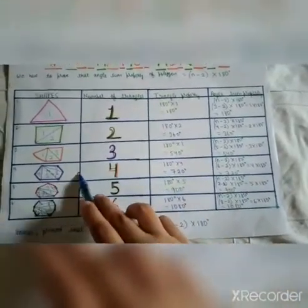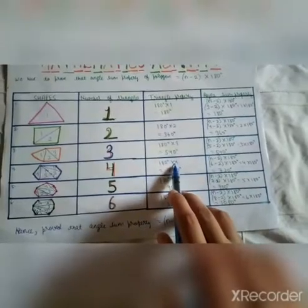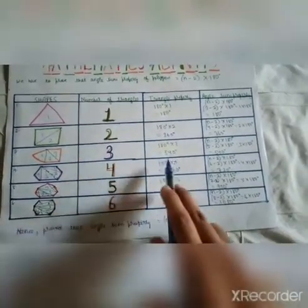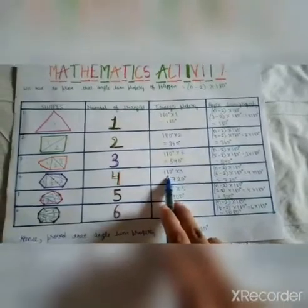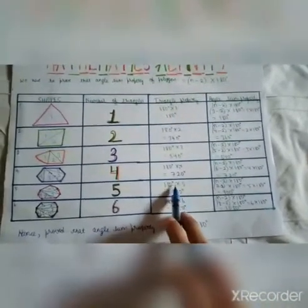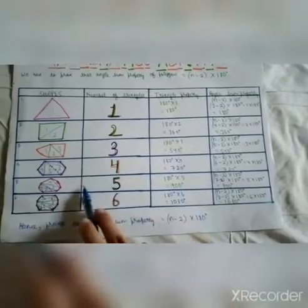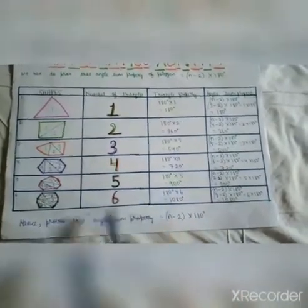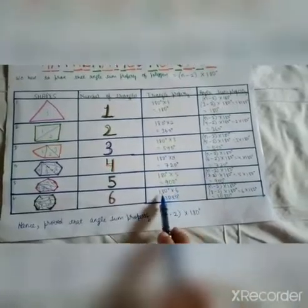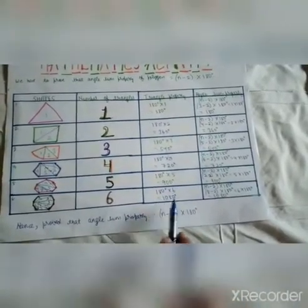In the case of a hexagon, we multiply 4 (the number of triangles) by 180 degrees, so 4 × 180 = 720 degrees. 180 × 5 = 900 degrees in a septagon. The number of triangles in an octagon are 6, so 6 × 180 = 1080 degrees.